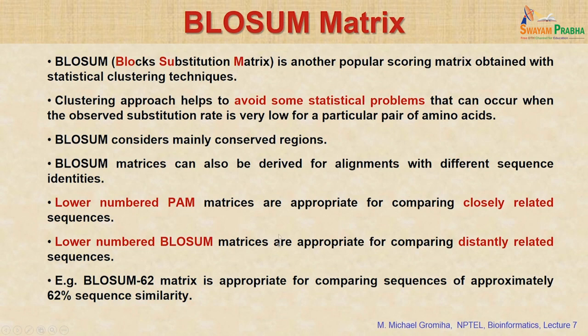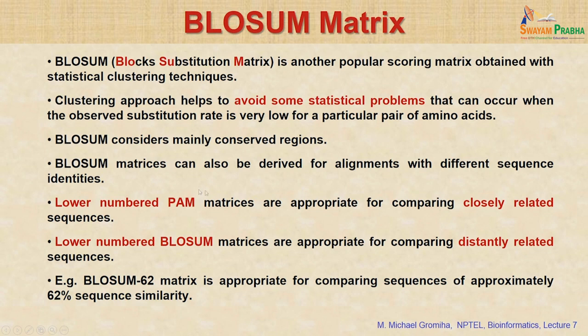Another popular matrix is the BLOSUM matrix. In constructing the PAM matrix, alignments sometimes have many gaps. In the BLOSUM matrix, only highly conserved positions — where proper alignment is clear — are used, avoiding regions with many gaps. This reduces statistical bias from very low substitution rates for certain amino acid pairs. Lower PAM numbers compare closely related sequences; for BLOSUM it is the reverse — lower BLOSUM numbers are for distantly related sequences. BLOSUM 62, used for sequences of about 62 percent similarity, is the most commonly used matrix in alignment programs.